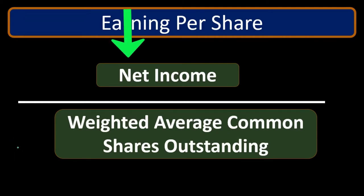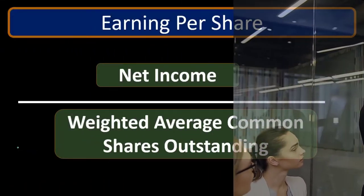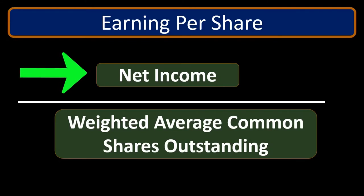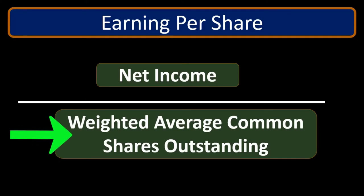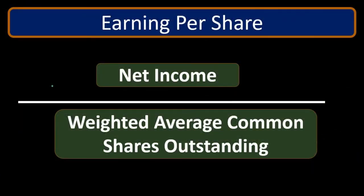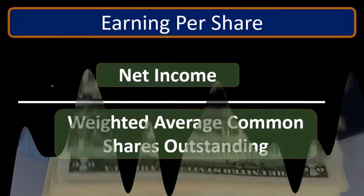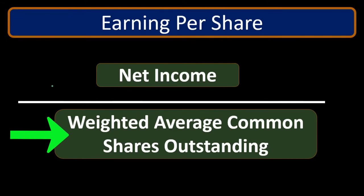You could think of this basically as net income divided by shares outstanding. If we had a pile of money — the net income earned throughout the time period — divided by the number of shares, that means the amount of money the company earned can be allocated to each share. If you owned one share, that would be the amount of net income allocated to your one share. If you own two shares, you get twice that amount, each share being proportional.